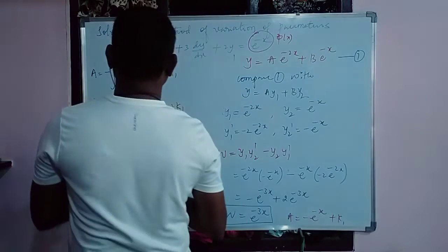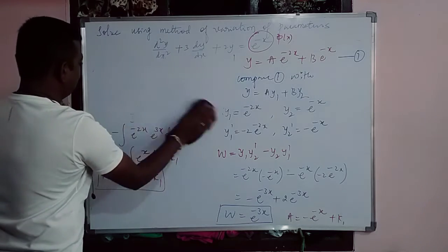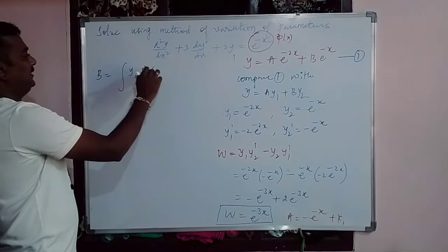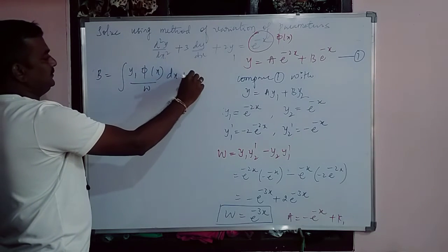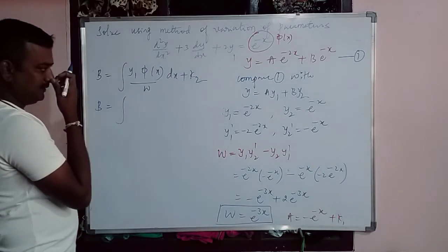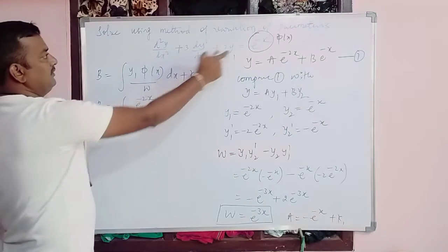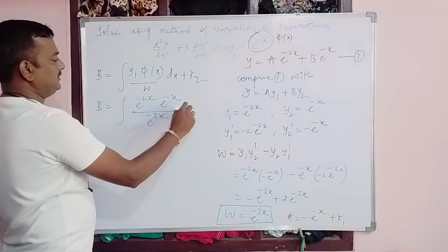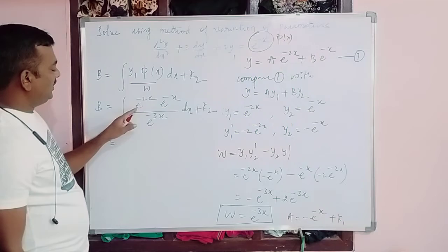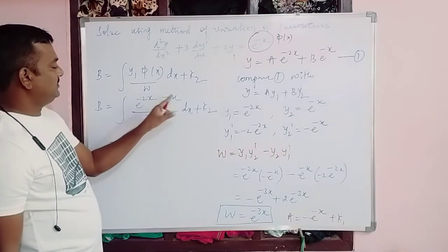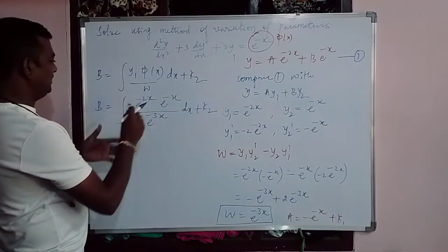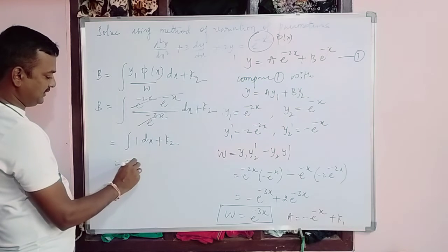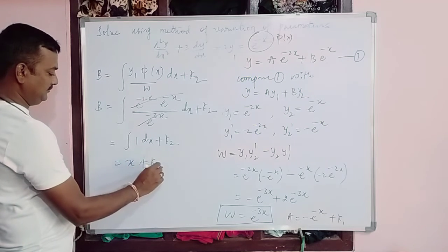Next, B = ∫(y1·φ(x)/W)dx + k2. Here y1 = e^(-2x), φ(x) = e^(-x), and W = e^(-3x). So B = ∫(e^(-2x)·e^(-x)/e^(-3x))dx + k2 = ∫(e^(-3x)/e^(-3x))dx + k2 = ∫1·dx + k2 = x + k2.